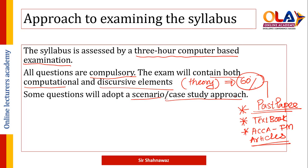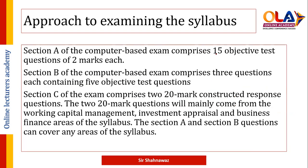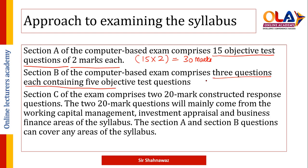Some questions will adopt a scenario or case study approach, which is normally Section C CRQs. Section A of the computer-based exam comprises 15 objective test questions of two marks each, covering 30 marks total, with both numerical and theoretical questions covering the entire syllabus. Section B comprises 3 questions each containing 5 objective type questions of two marks, worth 10 marks each — totalling 30 marks. Topics tested in Section B can include business valuation, risk management, working capital, or sources of finance.